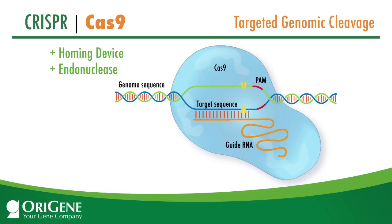Compared to previous genome editing methods such as zinc finger and TALEN, CRISPR-Cas is cheaper, quicker, and more accessible for researchers.